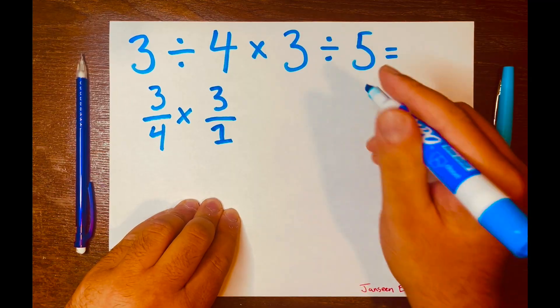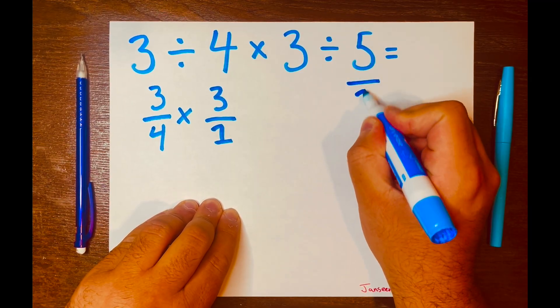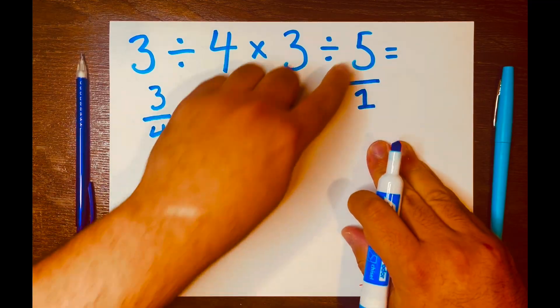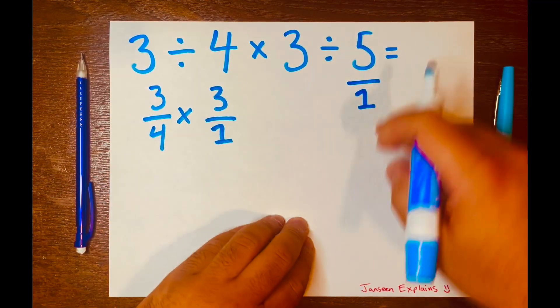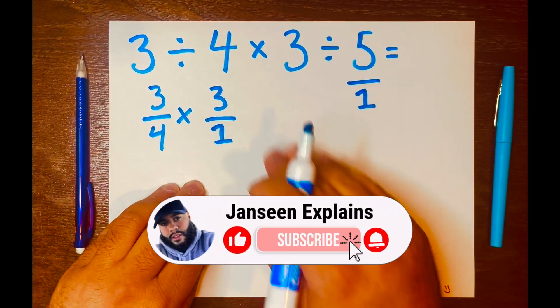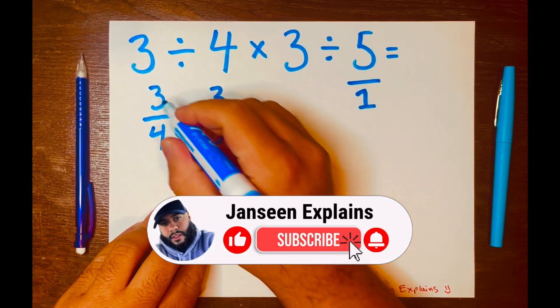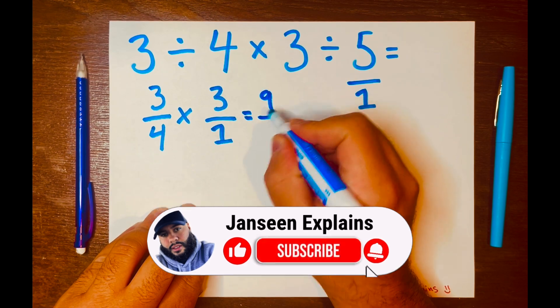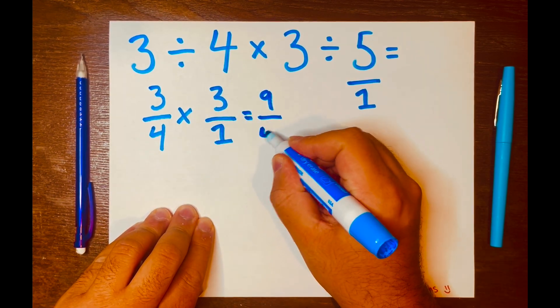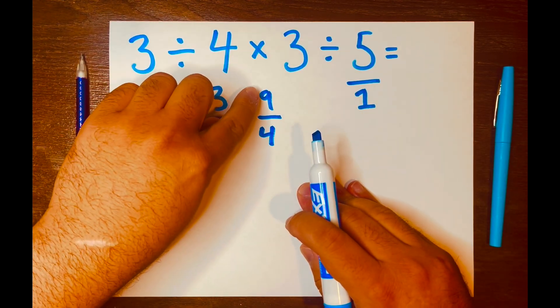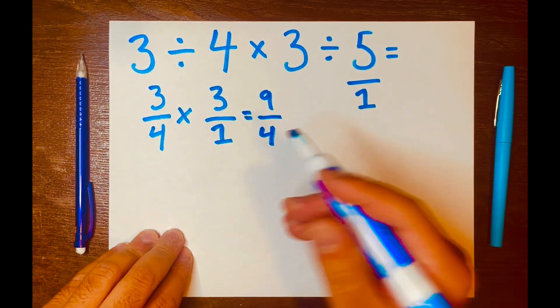And let's do that for this five: five over one. If you divide that, five divided by one equals five, does not change the five. All right, now let's go ahead and multiply across. Three times three is nine, four times one is four, and now we have an answer of nine over four.